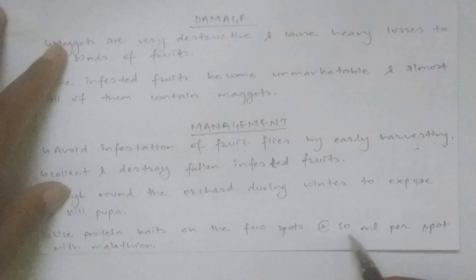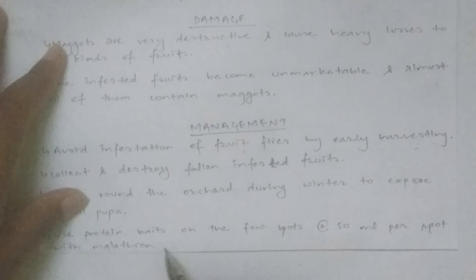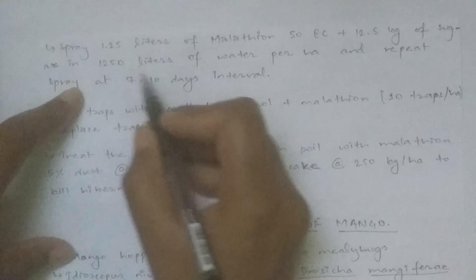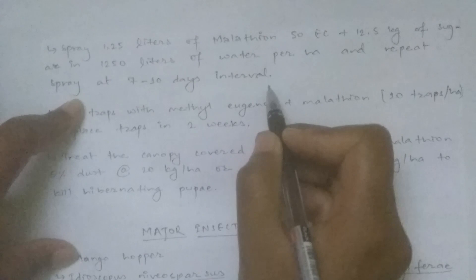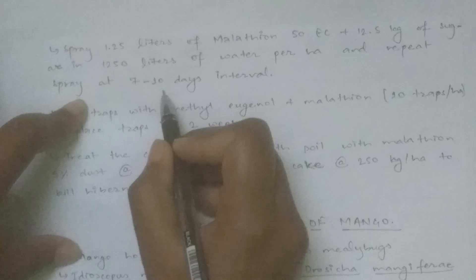Use protein bait on a few spots at the rate of 50 ml per spot with malathion. Alternatively, spray 1.25 ml of malathion 50 EC plus 12.5 kg of sugar in 1250 liters of water per hectare, and repeat the spray at 7–10 day intervals.